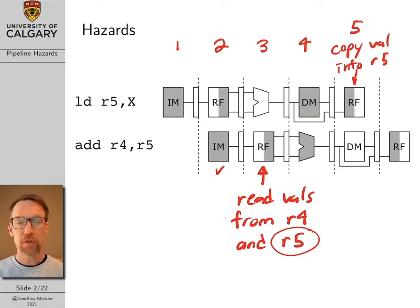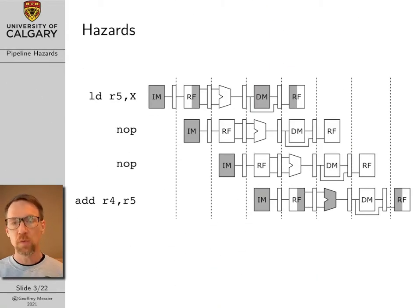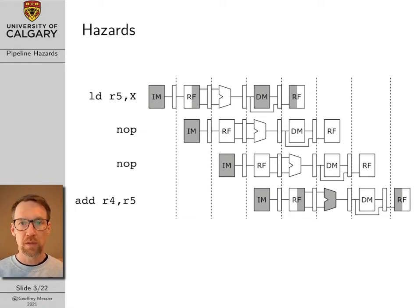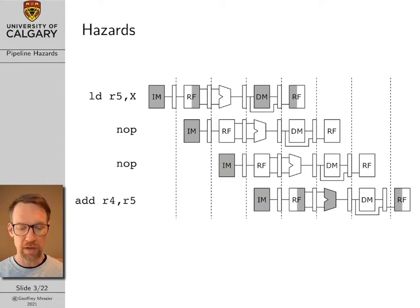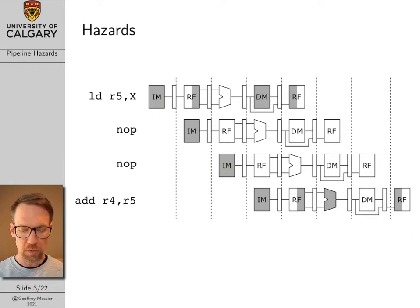This lecture is going to be all about how we deal with hazards. One simple way to fix the problem is to just insert a series of no-op commands — which stands for no operation — to buy the load command a little bit of extra time to finish its work before the add command needs the value in R5. Here's a pipeline timeline diagram where I've inserted two no-op commands.